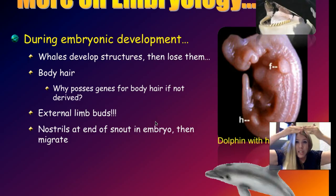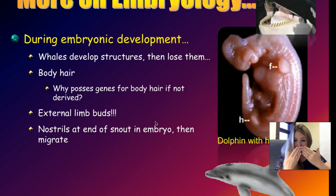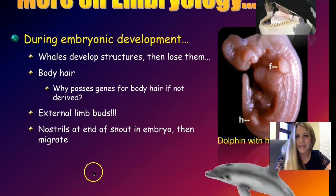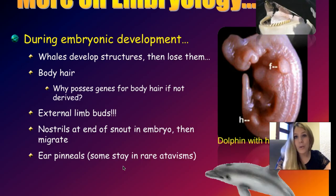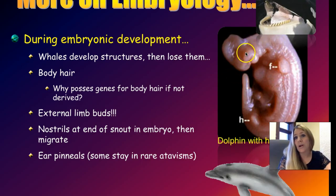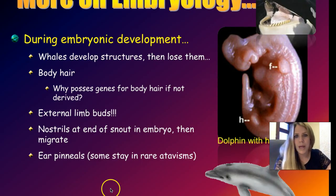You can actually watch the nostrils migrate during embryonic development. Whales would have inherited nostrils in the front of the face from their ancestors — they carry the genes for it — but they migrate to the top of the head during development. Whales also develop ear pinnae, holes where ears would go. They don't typically use external ears for hearing underwater, relying instead on sonar, but they still develop them, which then transform into what adult whales have.